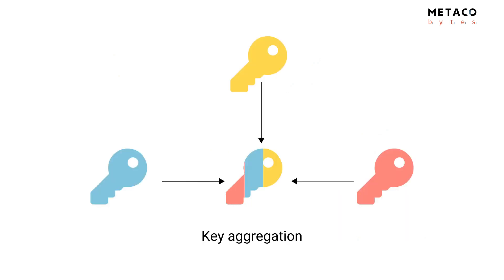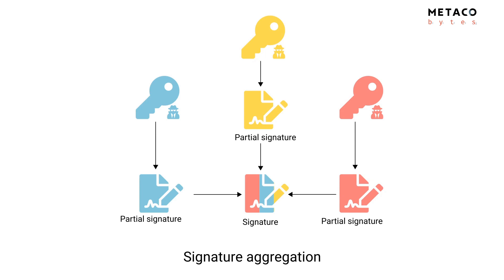This internal key is what we call the aggregated key. Key aggregation is done safely using the protocol called MuSig2 — I'll make a later video about how that process works exactly. For now, it's enough to say that Alice, Carol, and Bob each generate their own private and public keys, which can then be aggregated into a single key representing a 3-participant multisig of those three peers.